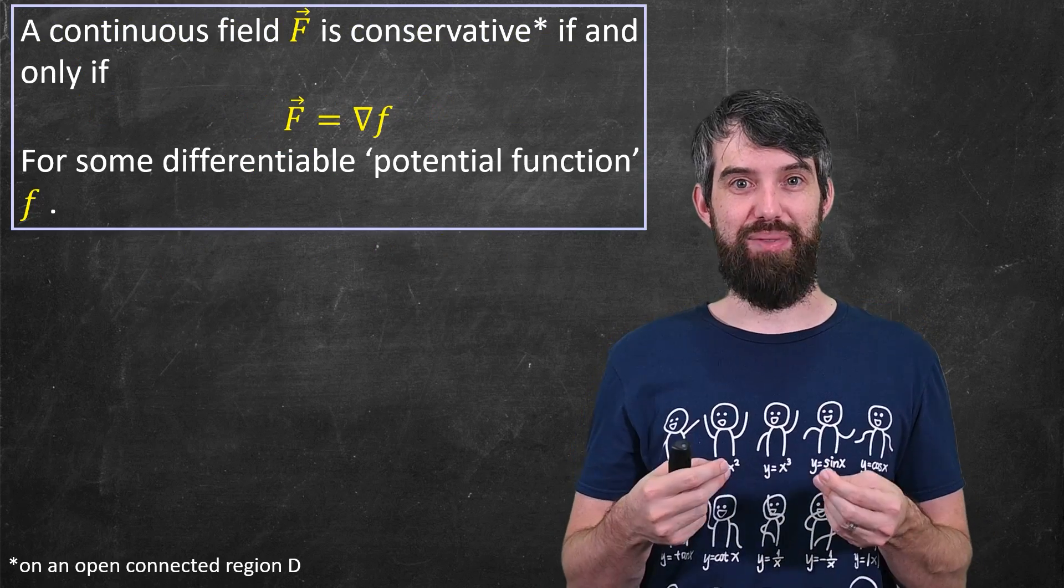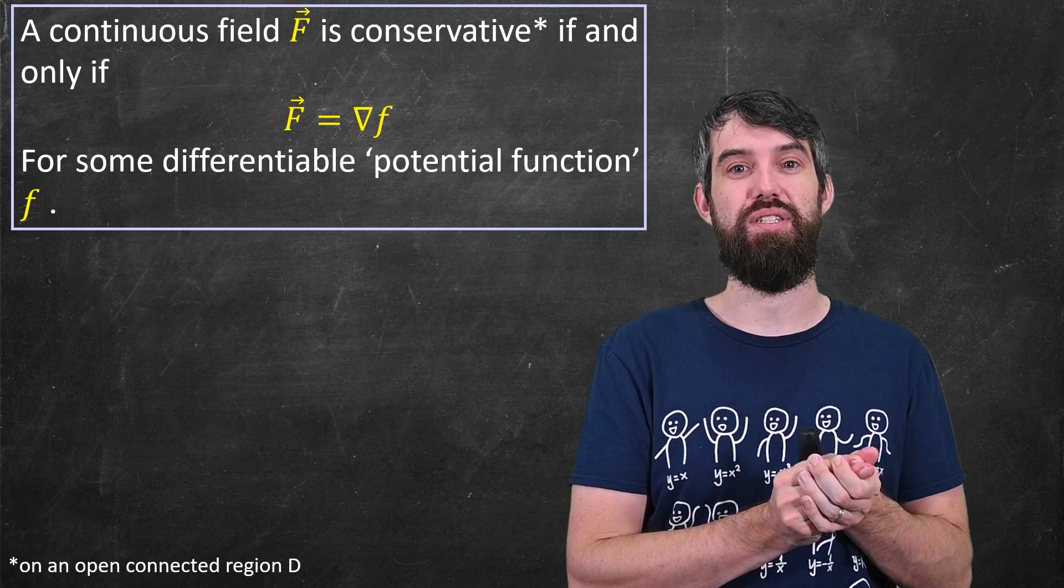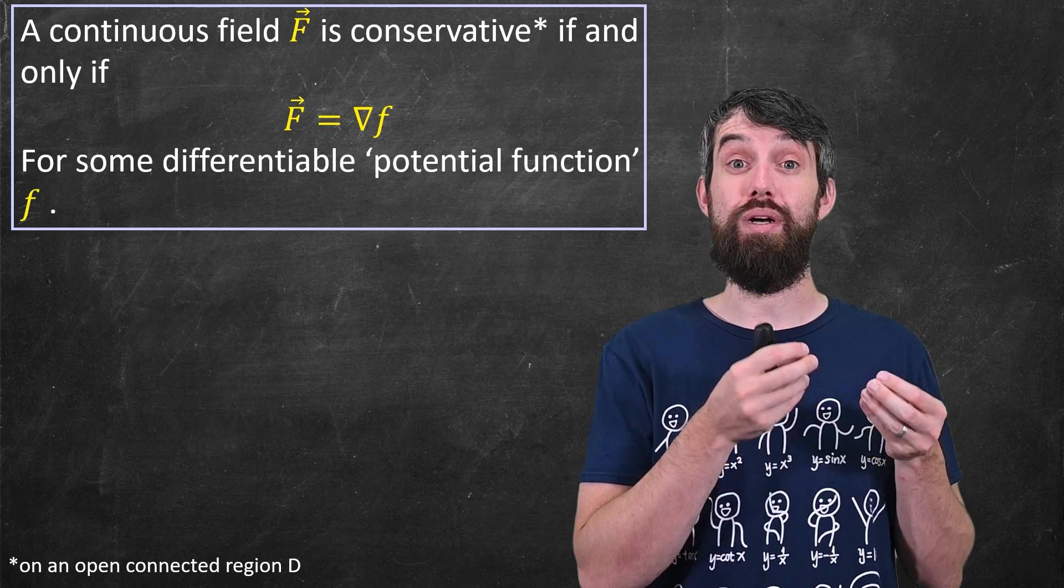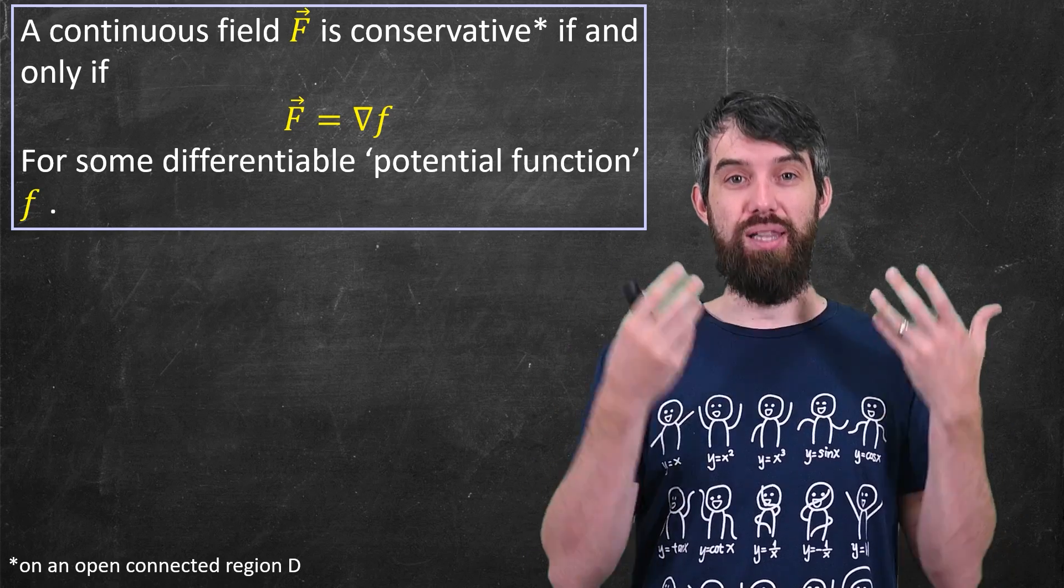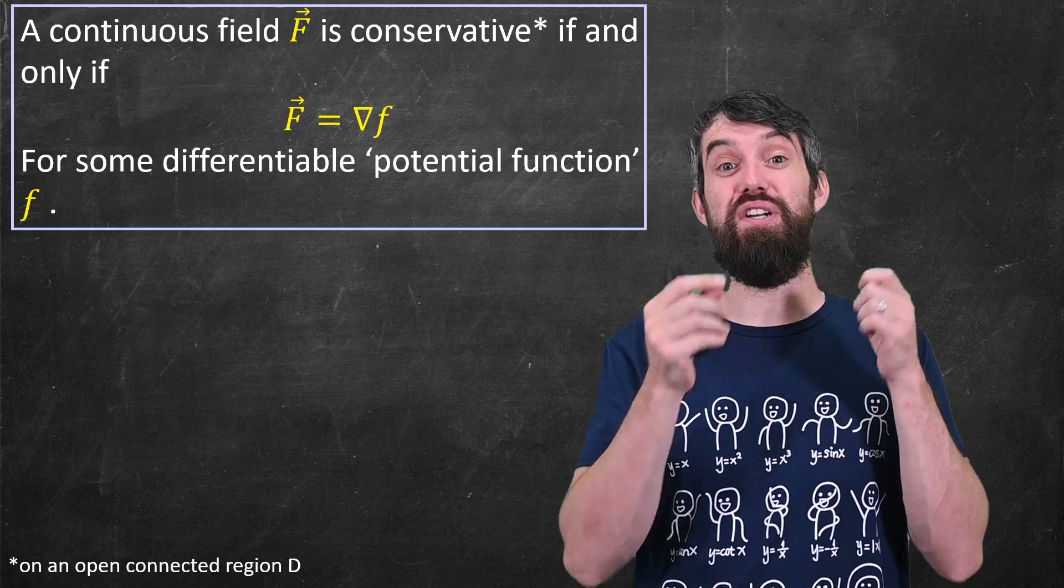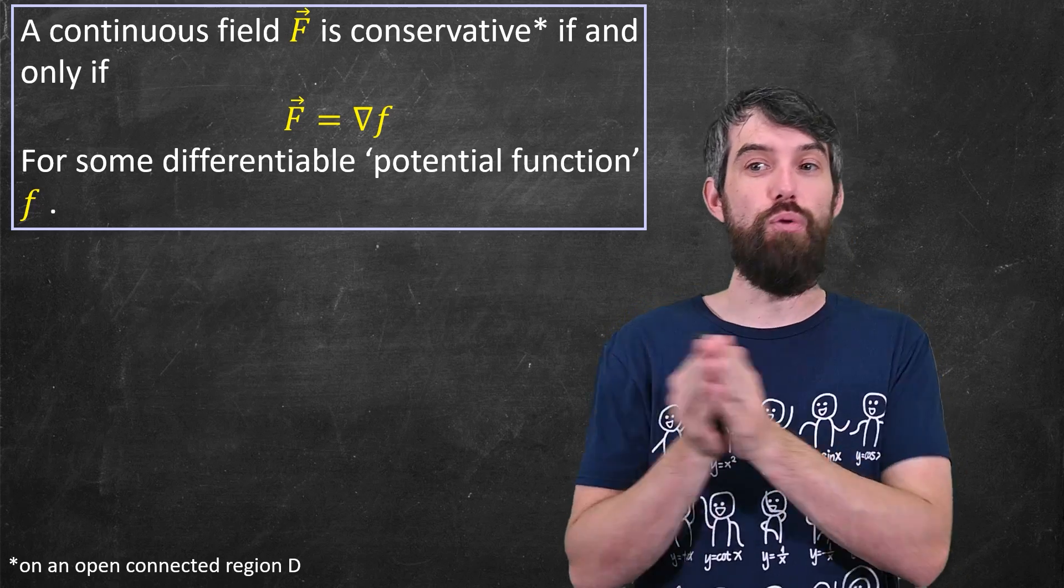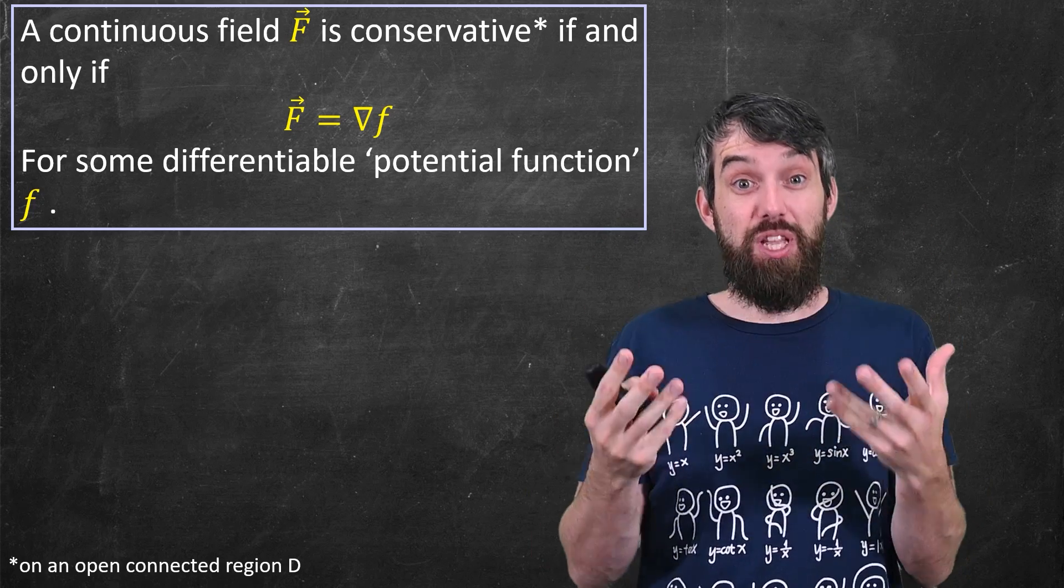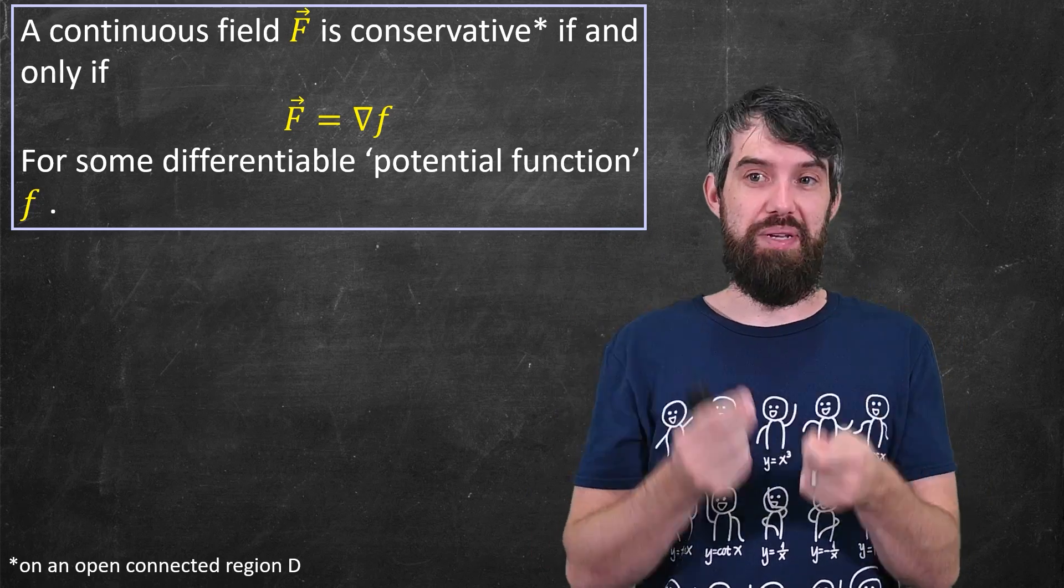Now I'm going to go back to this claim that I actually spoiled in the previous video on conservative vector fields. If you recall, a conservative vector field was one where the line integral was independent of the path and the claim is that a continuous field is conservative if and only if, so both directions, this field can be written as the gradient of a potential function.